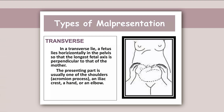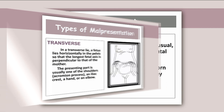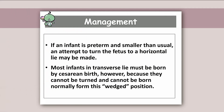In a transverse lie, the fetus lies horizontally in the pelvis so that the longest fetal axis is perpendicular to that of the mother. The presenting part is usually one of the shoulders, the iliac crest, a hand, or an elbow. If the infant is preterm and smaller than usual, an attempt to turn the fetus may be made. Most infants in transverse lie must be born by cesarean birth, as they cannot be turned and cannot be born normally from this position.